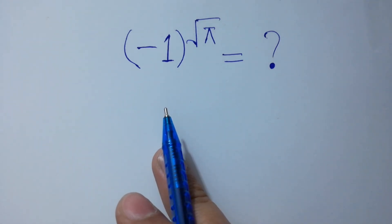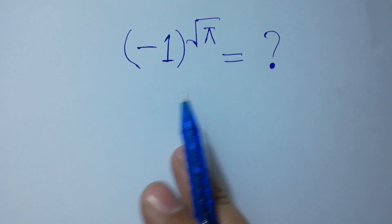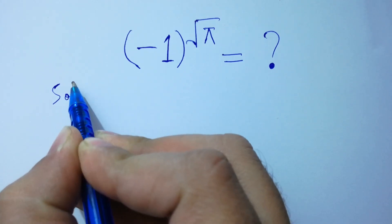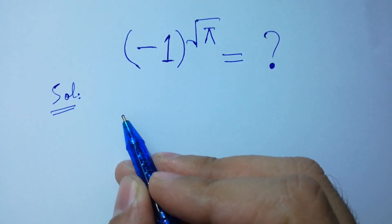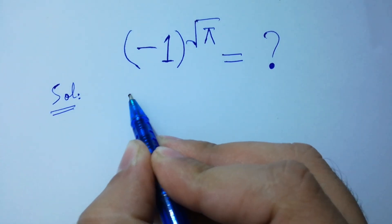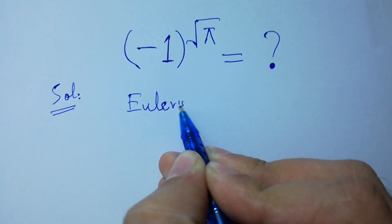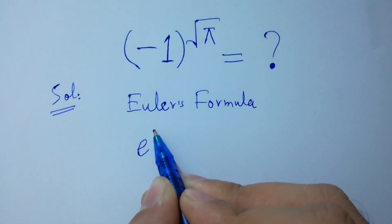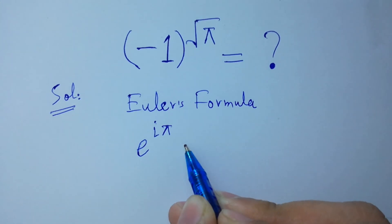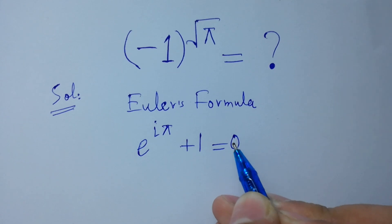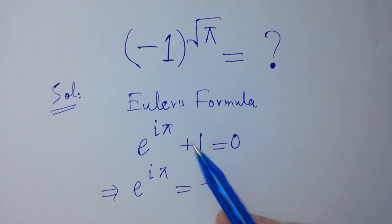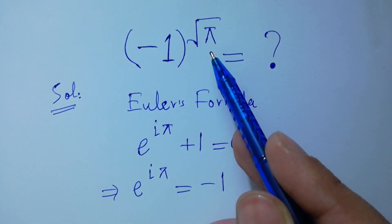Hello friends, many will feel: minus 1 to the whole power pi — what is it equal to? Let's find a solution. According to Euler's formula, e to the power i·pi plus 1 equals 0, so e to the power i·pi equals minus 1.